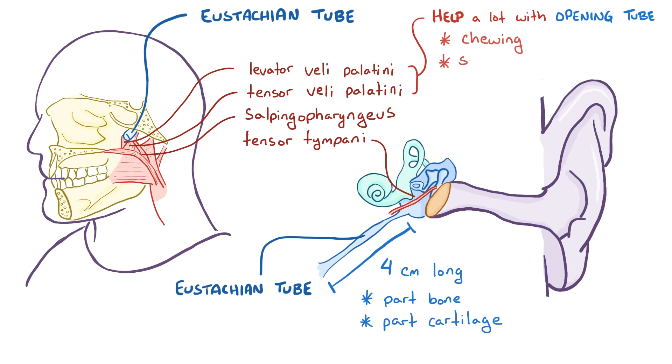Actions like chewing, swallowing, and yawning all pull on these muscles to help open up the eustachian tube.